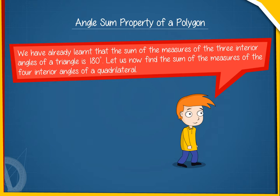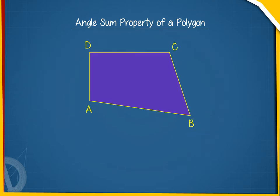Let us now find the sum of the measures of the four interior angles of a quadrilateral. Here ABCD is a quadrilateral. AC is one of its diagonals. The quadrilateral is split into two triangles ABC and ADC.